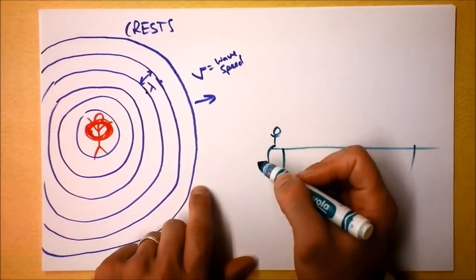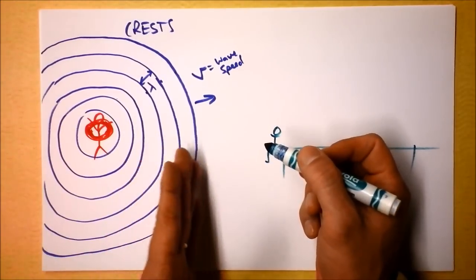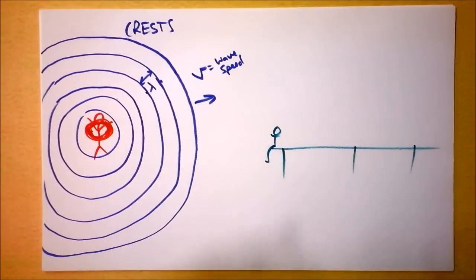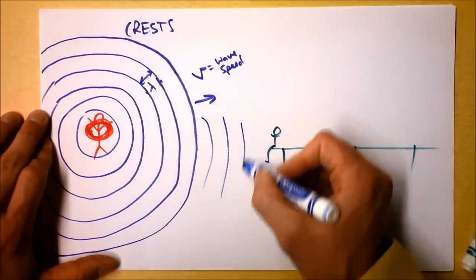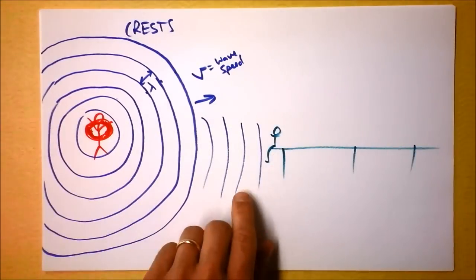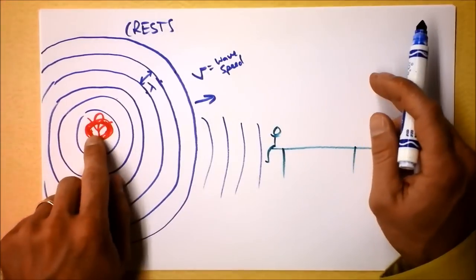You would see the same frequency, right? You'd see exactly the same frequency as these crests pass by you. Let's draw some more crests so they get up into your face. These guys are passing by you at the same frequency as they are being generated.